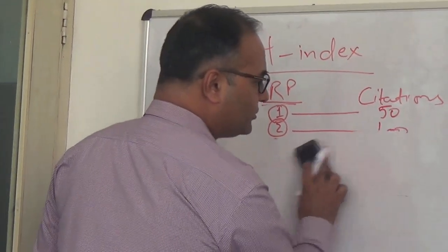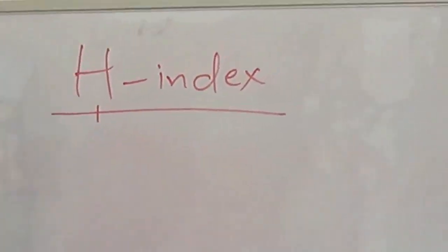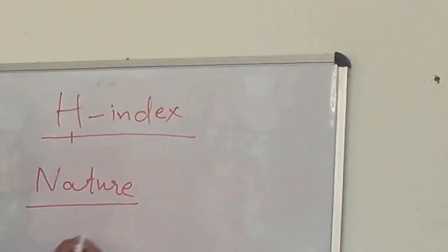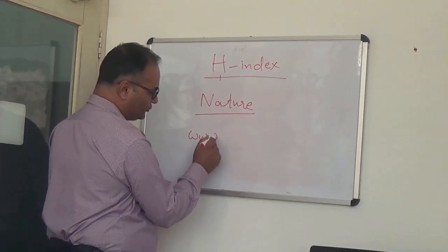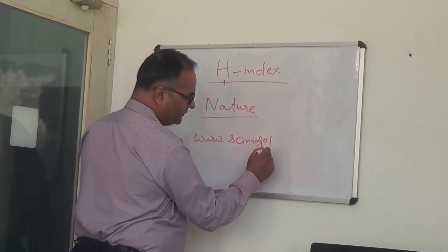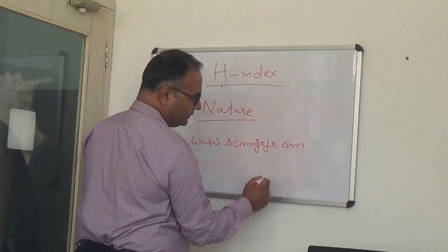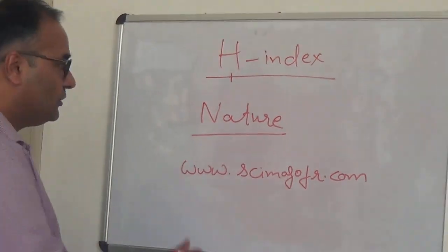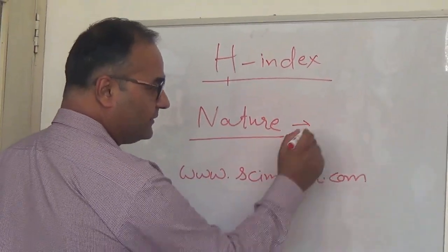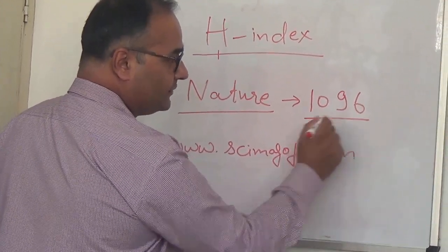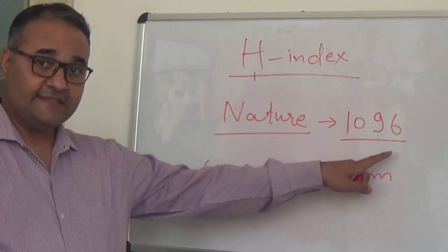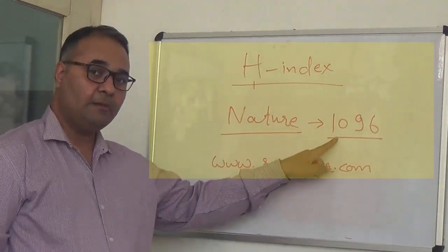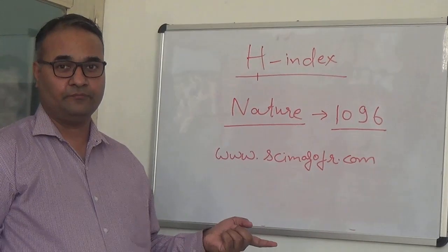Now let us talk about some more information about H-index. The world's biggest journal is Nature. This information is available on www.scimagojr.com, and everybody should refer to this website for finding out the H-index of journals or even countries. The world's biggest journal is Nature whose H-index as per this website is 1096. This means 1096 articles published in Nature have each been cited minimum 1096 or more times.